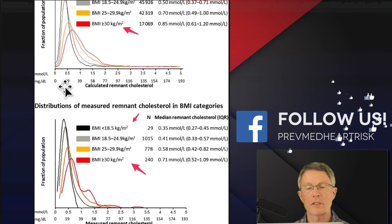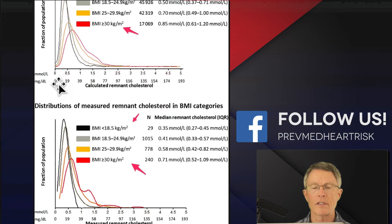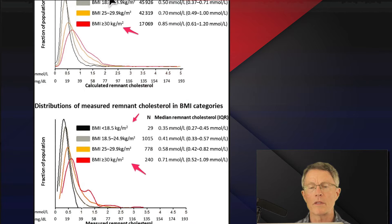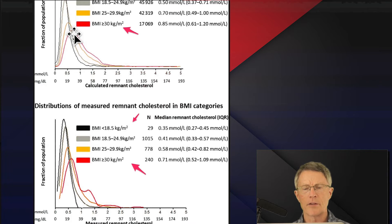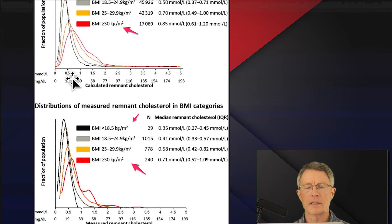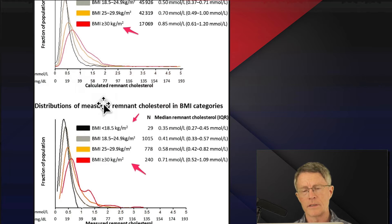Someone with a BMI in the 18 to 19 range has a remnant cholesterol down around 15 or less than 19. The red line represents a BMI greater than 30, and those individuals have remnant cholesterols way over 19.